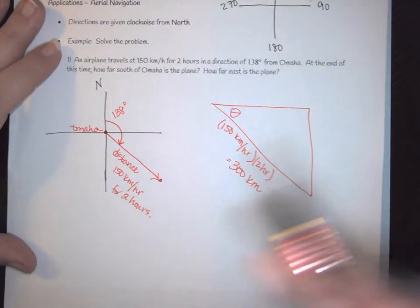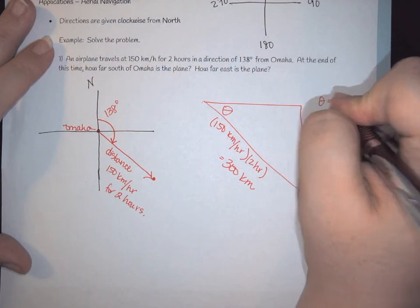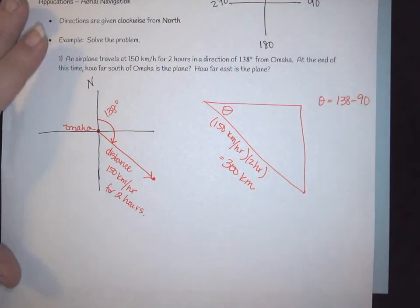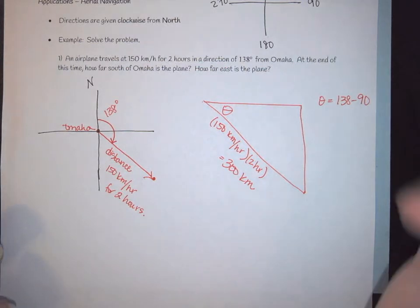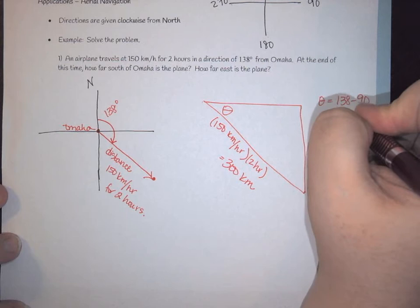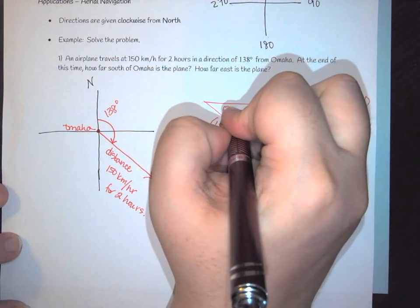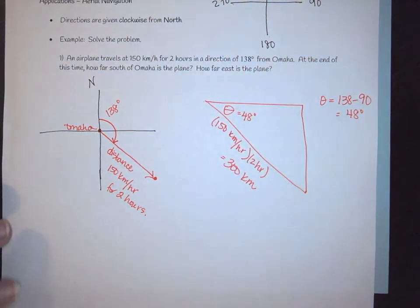So in order to find my theta, we have that your angle is going to be 138 minus 90. So when we do that we end up with an angle of 48 degrees. So this is going to be my 48 degrees, so theta right here is going to be 48 degrees.